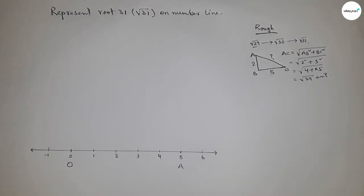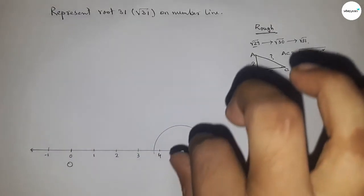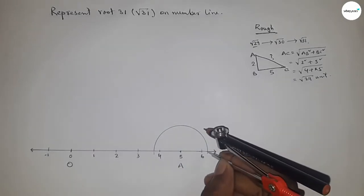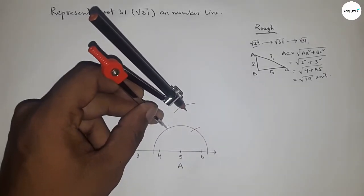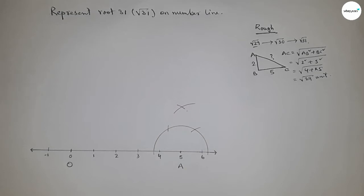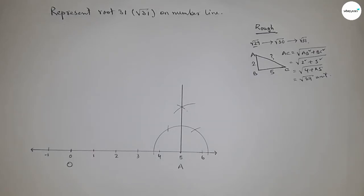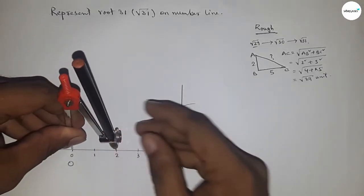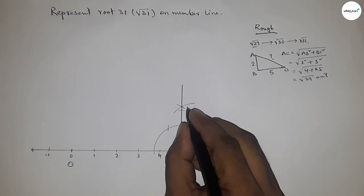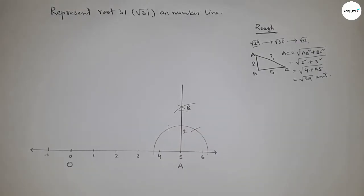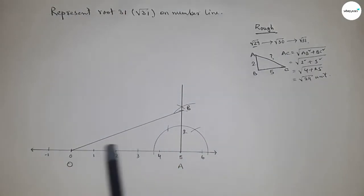We apply this concept between 0 and 5 on the number line, where O is at 0 and A is at 5. First, draw a 90-degree angle at point A using the compass. Then take two unit lengths by compass, place the compass at A, and mark point B. Now join O and B — this length OB equals root 29 units.